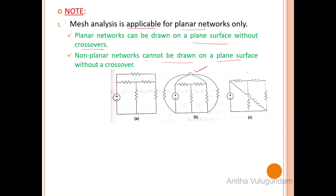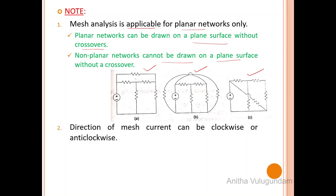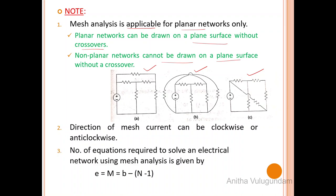Networks A and C are planar networks because they don't have any crossover. The direction of mesh current can be clockwise or anti-clockwise. The number of equations required to solve an electrical network using mesh analysis is given by E = M = B minus N minus 1, where B is the number of branches and N is the number of nodes.